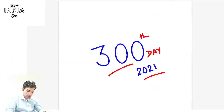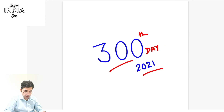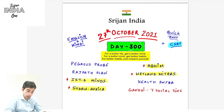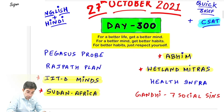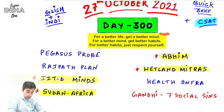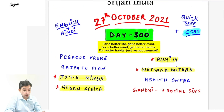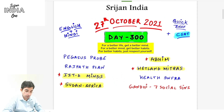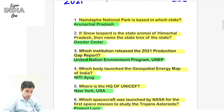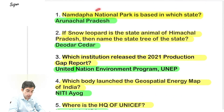Hi, today is the 300th day of year 2021. Every day means every day — for a better life, get a better mind; for a better mind, get better habits; for better habits, just respect yourself. Today is 27th of October 2021. Let us have a quick discussion of all these important topics.